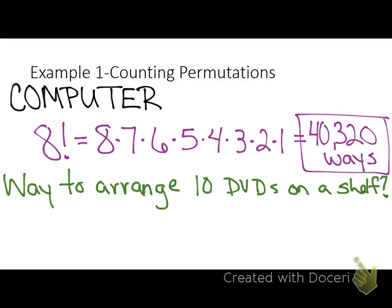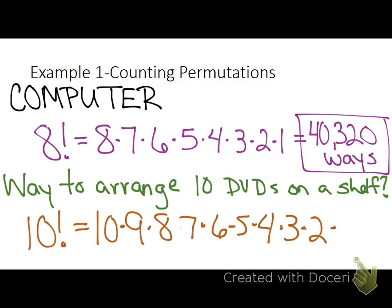Ways to arrange 10 DVDs on a shelf. 10 exclamation point equals, and then you go 10 times 9 times 8, 7, 6, 5, 4, 3, 2, and 1. And what do you get? 3 million 628,800. Is that what y'all got? Just a little typo in there.